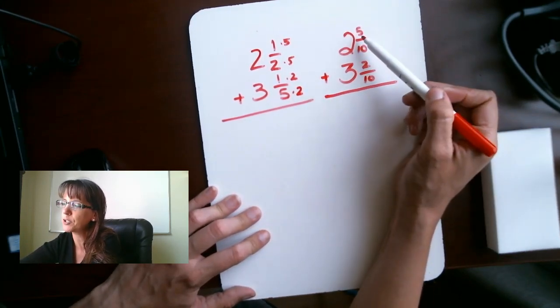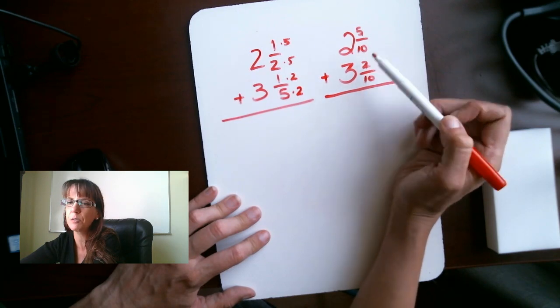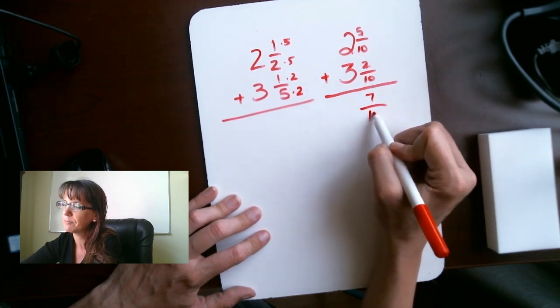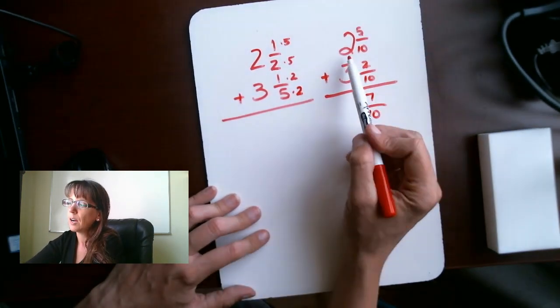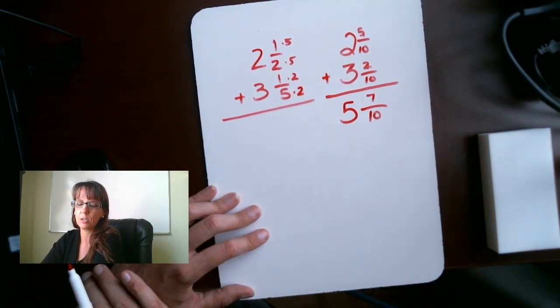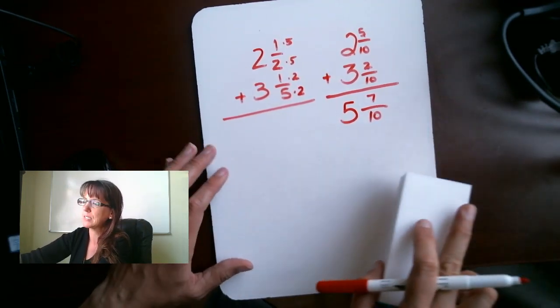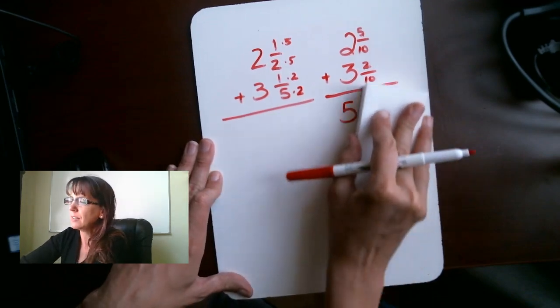Good. Let's look at our fraction part here. We have 5 over 10 plus 2 over 10. That gives us 7 over 10. 2 plus 3 gives us 5. And that is our answer. Good. I hope you got 5 and 7 tenths. Excellent.